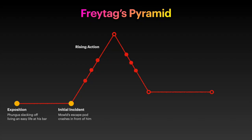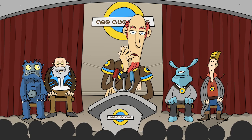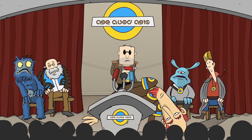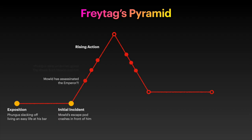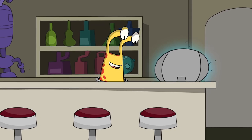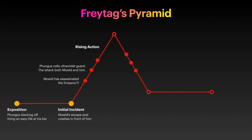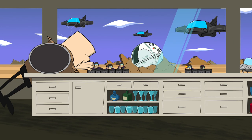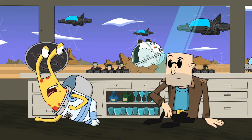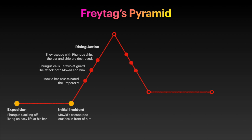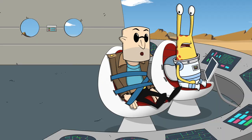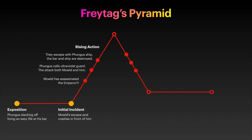Then we get to the rising action — things start getting exciting. First, the news mentions that Mold has probably assassinated the emperor — tension rises. Then Fungus calls the ultraviolet guard to try to resolve the situation, which seems like things are getting better, but it gets complicated and the ultraviolet guard attacks the whole bar with him inside. Next, they escape with Fungus's ship — a positive movement — although the bar is destroyed and the ship is heavily damaged.